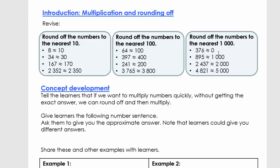Welcome back. Now we're rounding off numbers to the nearest thousand. For 376, this number is between 0 and 1,000. Because the 100s place is a 3, we round to the previous number — it is 0. For 895, it's also between 0 and 1,000, but because the 100s place is an 8, when we round it off, it becomes 1,000.